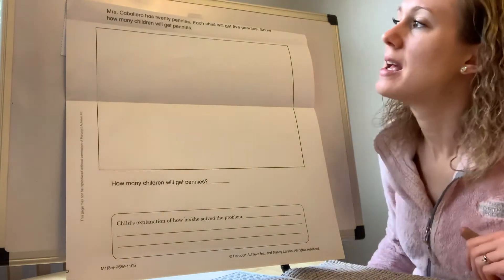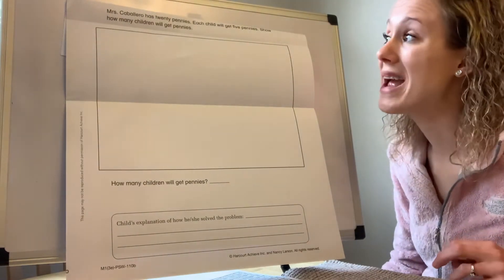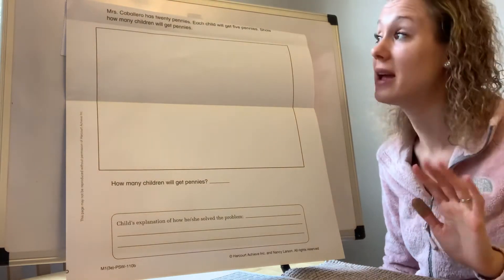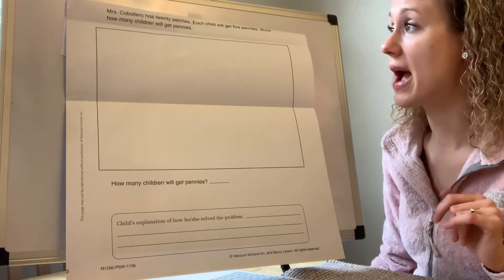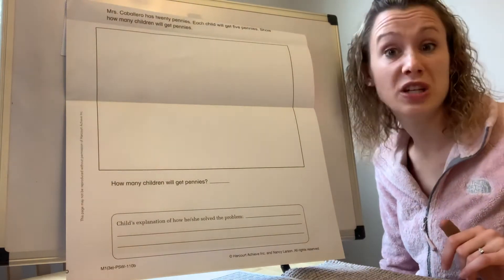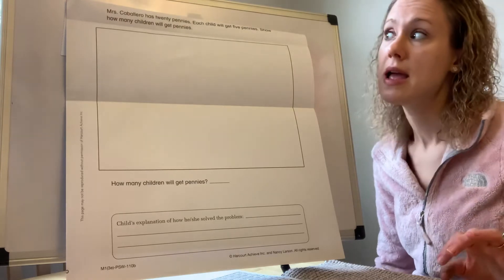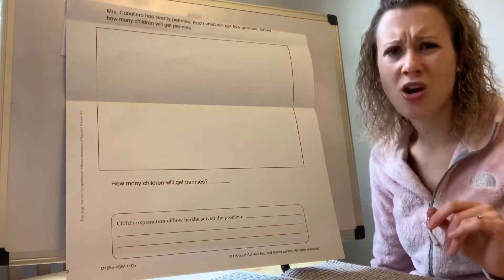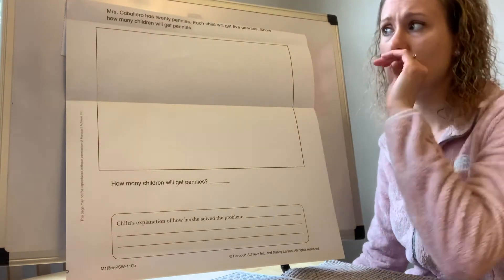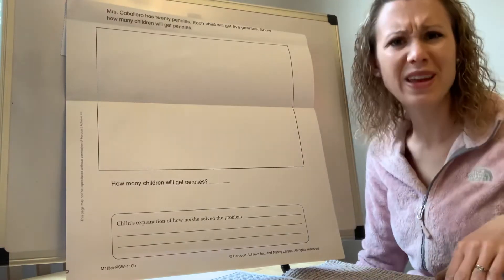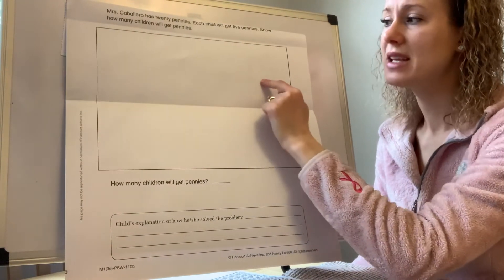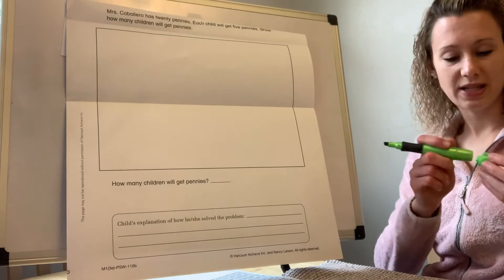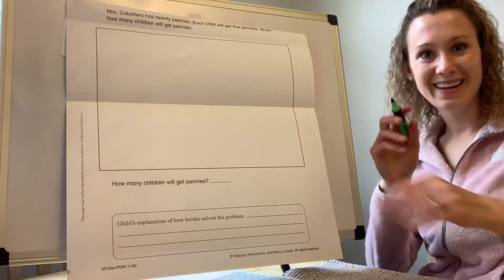It says Mrs. Caballero has 20 pennies. Whoa. Each child will get 5 pennies. That's nice of her. Show how many children will get pennies. Okay. So she has 20 pennies to share and every child will get 5. So the first thing we need to do is draw those 20 pennies. So I know that I can make circles really little. So 20. Oh, we can just count by 10s. So if I do 10 pennies in one line and 10 pennies in the next line, that would be 10, 20.